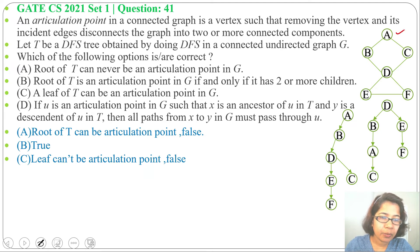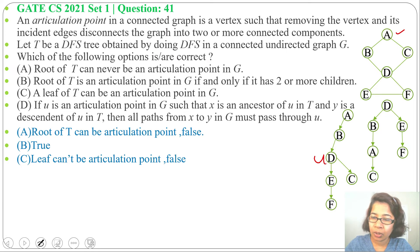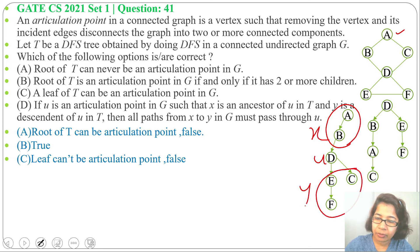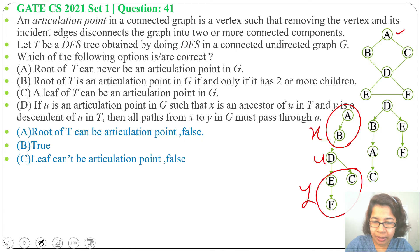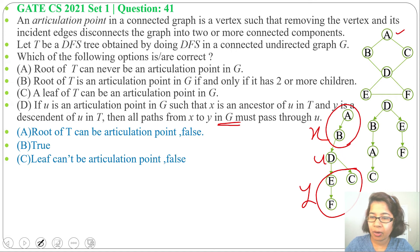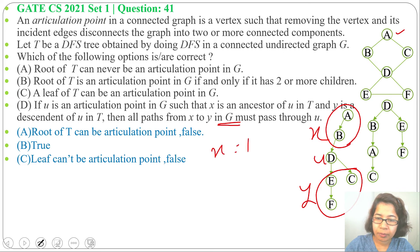Option D: if U is an articulation point in the graph such that X is an ancestor of U in T and Y is a descendant of U in T — so D is our articulation point U. A and B are X (ancestors in T), and E, F, C are Y (descendants of U). Then all paths from X to Y in G must pass through U. It is saying all paths from A or B to E, F, or C must pass through D.